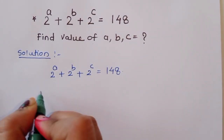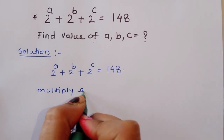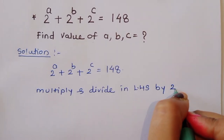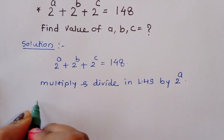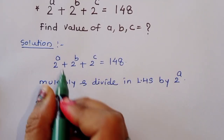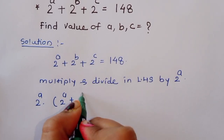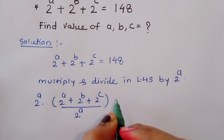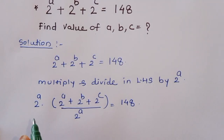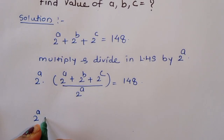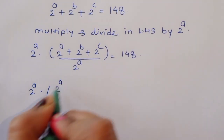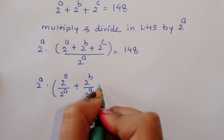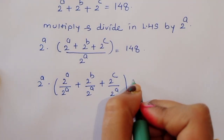We can do one thing here — multiply and divide the LHS by 2 power A. So we write: 2 power A times (2 power A plus 2 power B plus 2 power C) divided by 2 power A equals 148. Now we separate the terms: 2 power A divided by 2 power A, plus 2 power B divided by 2 power A, plus 2 power C divided by 2 power A, equals 148.